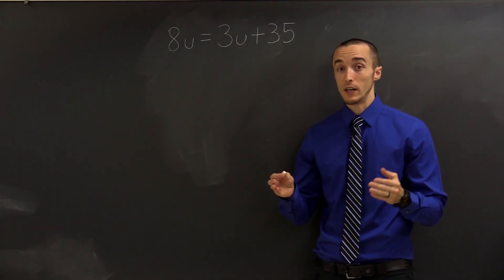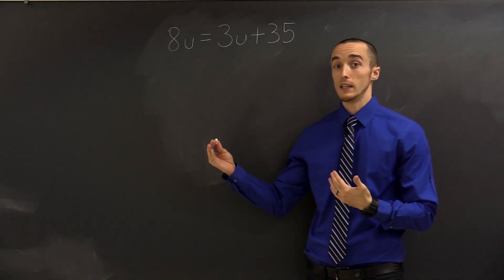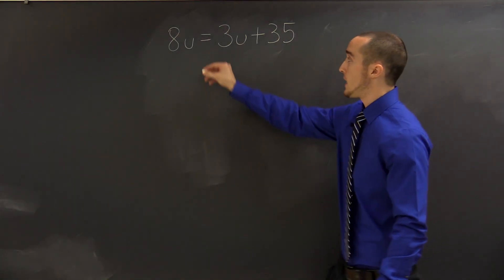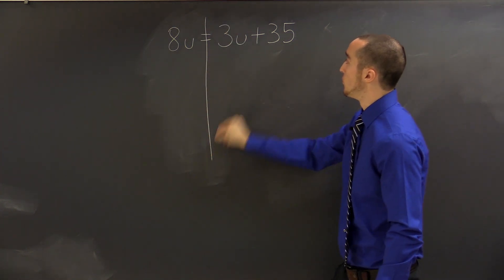Okay, so what do we do if we have to solve an equation, but there's variables on both sides of the equal sign? Like this one: 8u equals 3u plus 35.